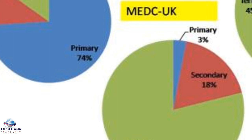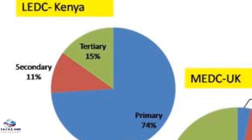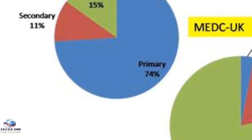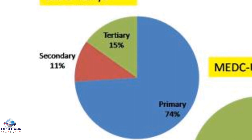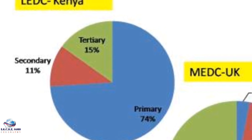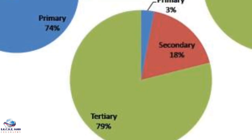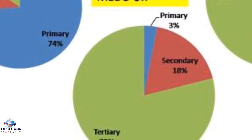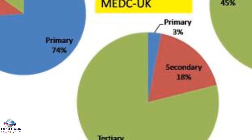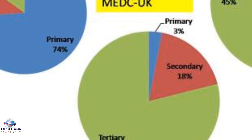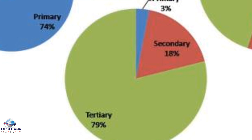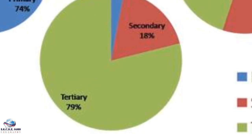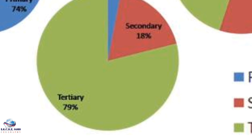In most LEDCs, the primary sector employs the majority of people. In Kenya, 74% of people are employed in the primary sector, while the secondary sector has only 11%, and the tertiary sector has 15%. Moving on to MEDCs, using the UK as an example, the primary sector employs the smallest number — only 3% — and the secondary sector has 18%, while the tertiary sector employs 79%.